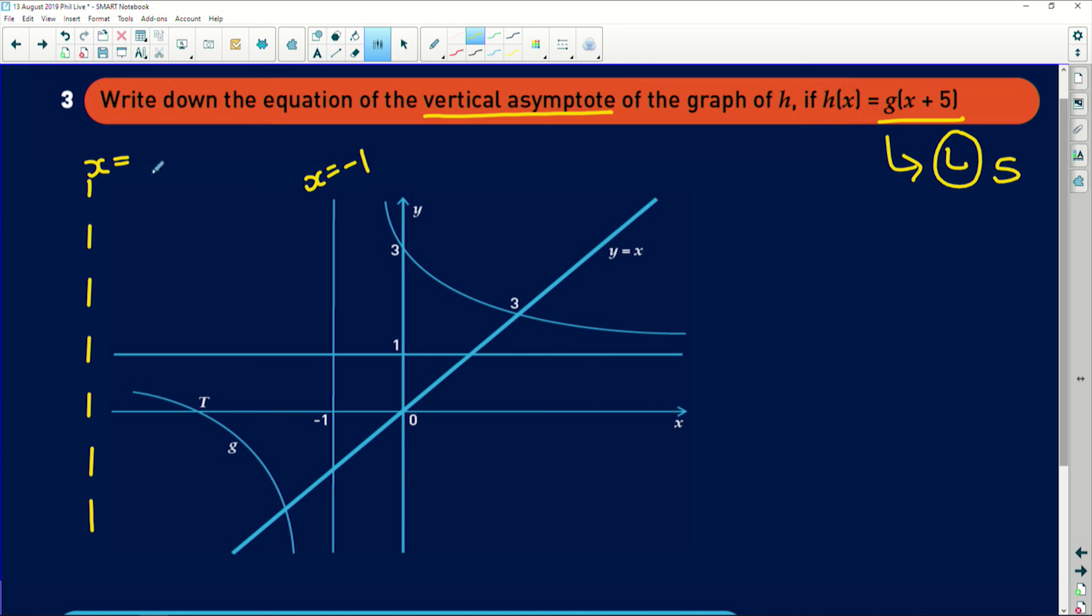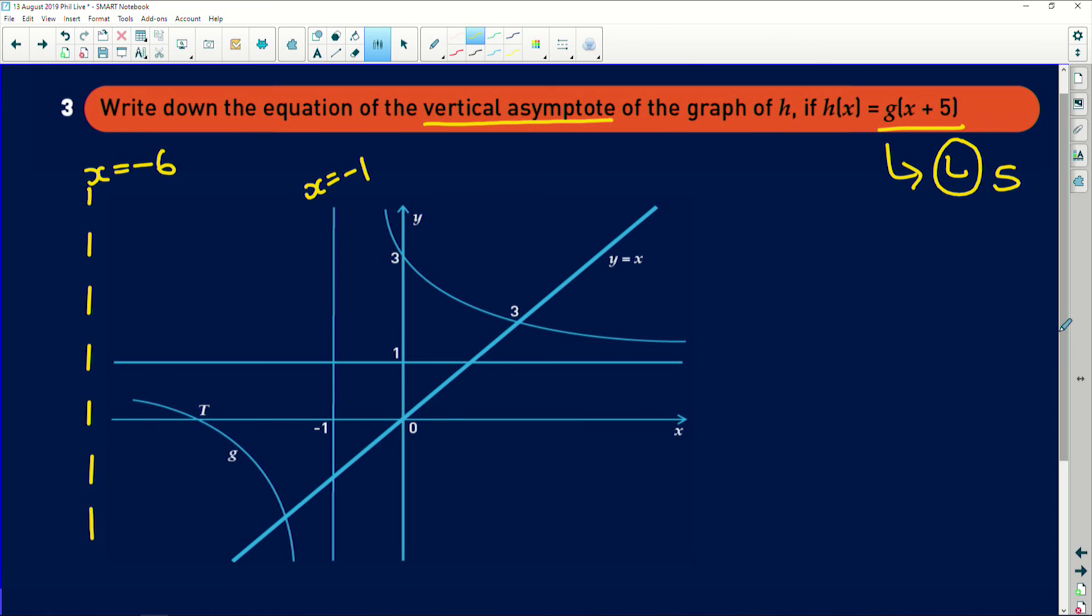So the whole graph would shift. We'd have the new graph sitting there and another new graph sitting all the way down there somewhere.